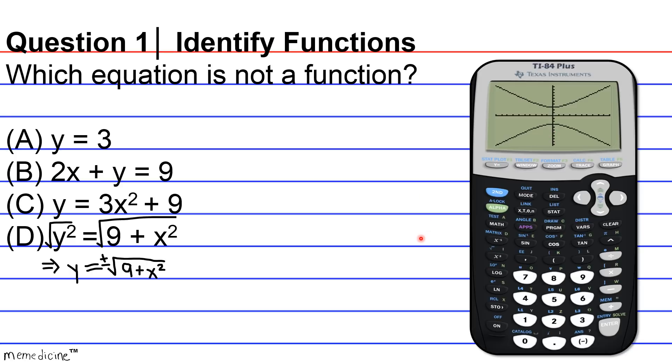Okay, so yeah, the correct answer choice is going to basically be answer choice D. And again, the reason why is because each x value has two y values associated with it, and it does not pass the vertical line test when we do a visual inspection.